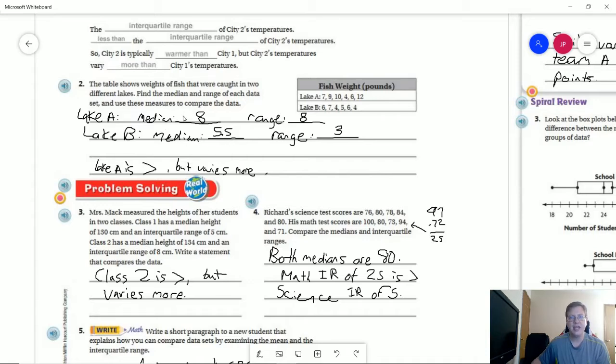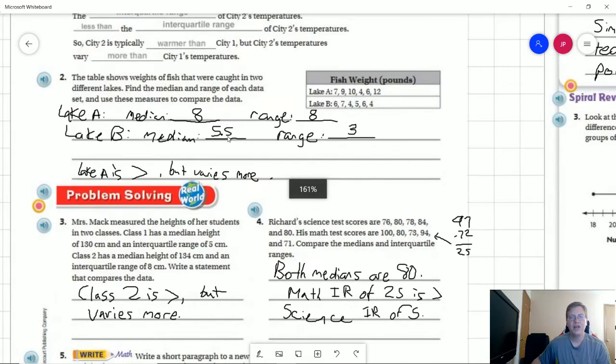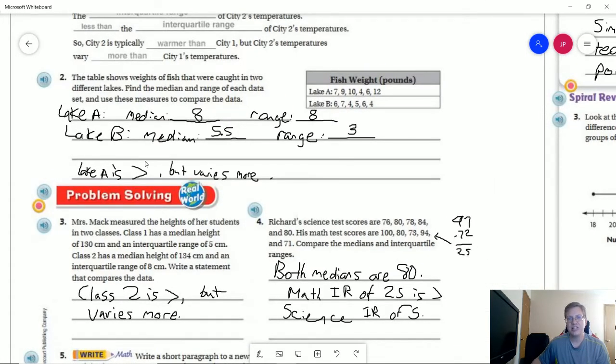And so for Lake A, our average weight or median weight rather, would be eight pounds compared to 5.5 pounds for Lake B, which means the fish in Lake A are on average going to weigh more.